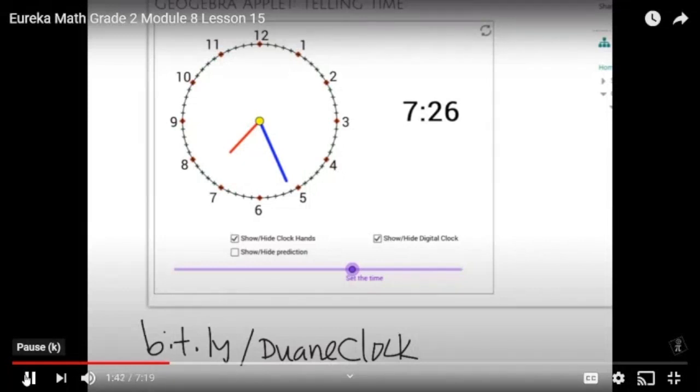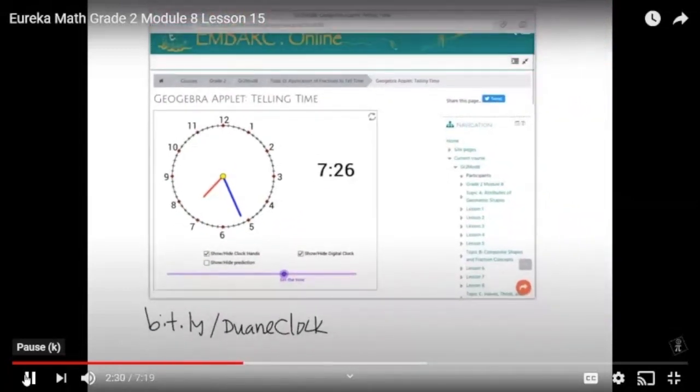Or you could do the reverse. You could hide the analog clock, set the digital clock, and then you could say, well, what would the analog clock look like? In which case you can set up the prediction hands. And the kids will use their fingers and they can move the hand wherever they want it to go. So I'm going to do 45 and I'm going to say, oh, I don't know. I guess that's my prediction. And then have the students click on show clock hands. And we're going to click on that. And oh, look at that. I was pretty darn close. If I hide and show those, the actual hands, boy, I was pretty darn close. So parents and teachers, let your students have fun with telling time. And this GeoGebra applet is one way to do that.